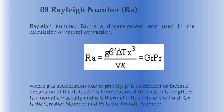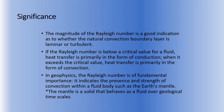It is equal to G multiplied by β (beta) multiplied by ΔT (delta T) multiplied by X³, all divided by ν (kinematic viscosity) multiplied by α (thermal diffusivity), where G is the acceleration due to gravity, β is the coefficient of thermal expansion of a fluid, ΔT is the temperature difference, X is the length, ν is the kinematic viscosity, and α is the thermal diffusivity. GR and PR refer to the Grashof and Prandtl numbers respectively.